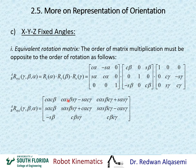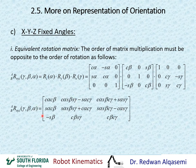Whenever we use this form of rotation, we can either list each individual matrix and multiply them in the opposite order of rotation, or we can directly use the combined formula if the rotation sequence is first about x, then y, then z.